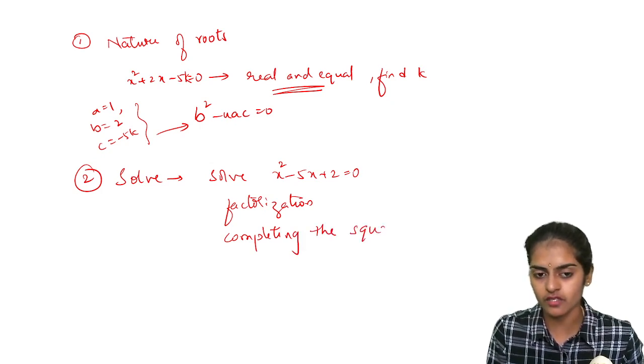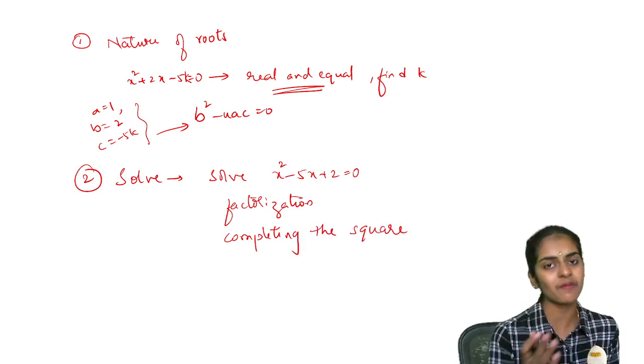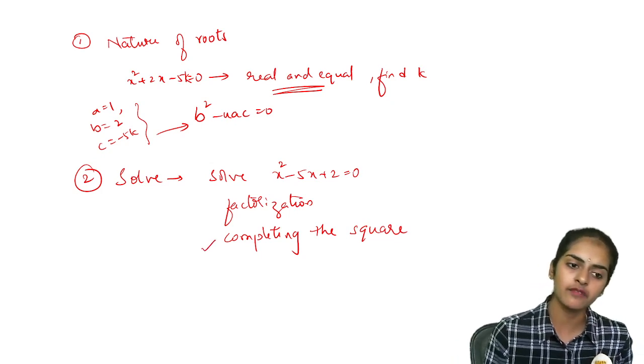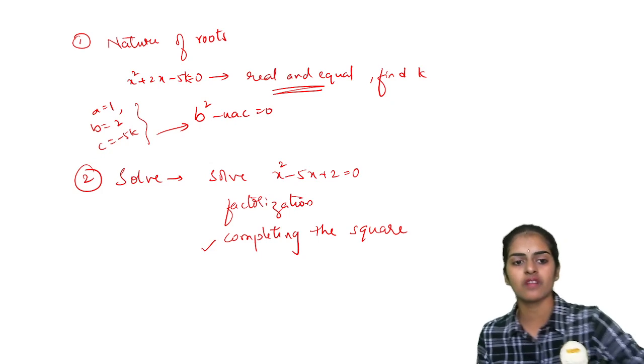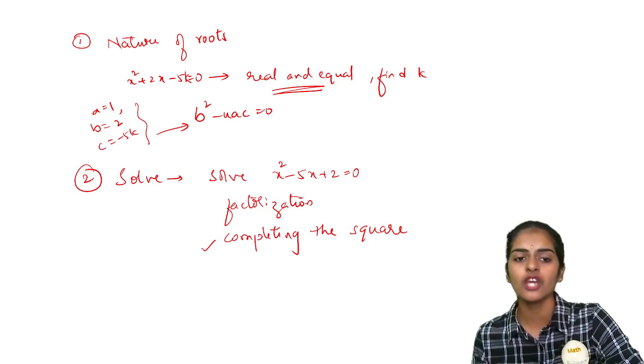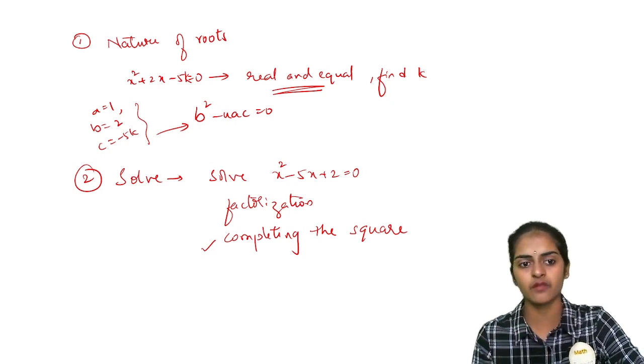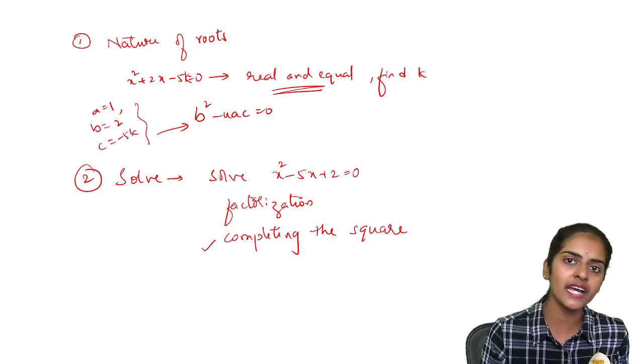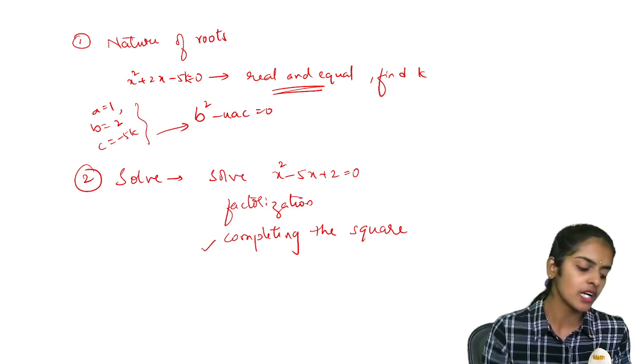If they ask you solve x square minus 5x plus 2 equal to 0 using completing the square method, then you will use this. Or if they ask you solve using factorization method, then you will use only factorization method. So these are the only and only important questions from quadratic equations.